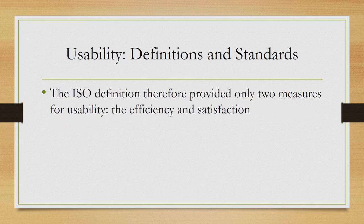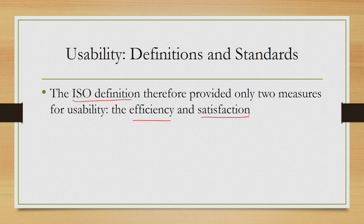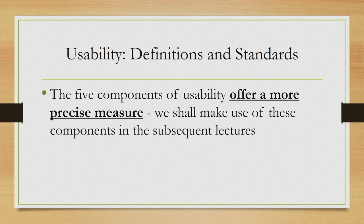According to the ISO definition, effectiveness is one of the measures of usability. However, comparing it with Nielsen's framework, we can roughly see a correspondence between the ISO measure of effectiveness and Nielsen's definition of utility. As a corollary to this comparison, we can say that the ISO definition therefore provided not three but two measures of usability — efficiency and satisfaction — whereas Nielsen's framework provides five measures. Accordingly, we shall assume that Nielsen's five quality components are the measures of usability, and we will use these to measure usability in subsequent lectures.